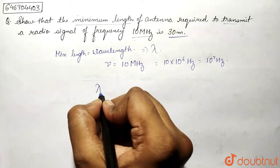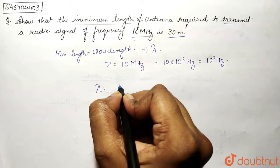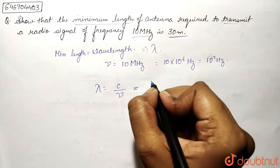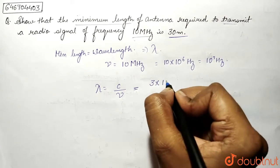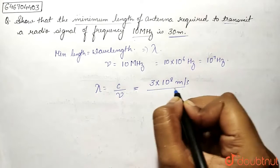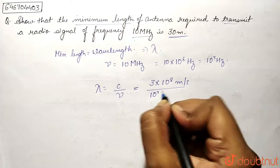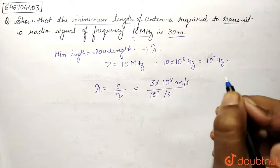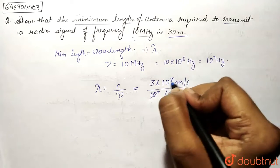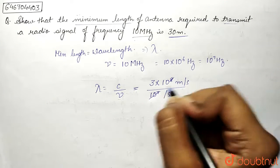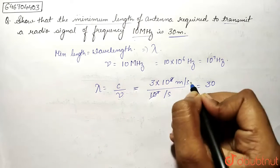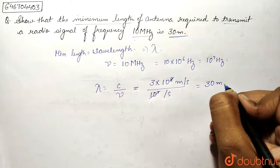So lambda equals c upon frequency nu, and c is the speed of light, that equals 3 into 10 power 8 meter per second, and nu is 10 power 7 hertz per second. So 10 power 7 gets cancelled with 10 power 8, what is left is 10. So this equals 30, seconds cancel, we are left with meter.